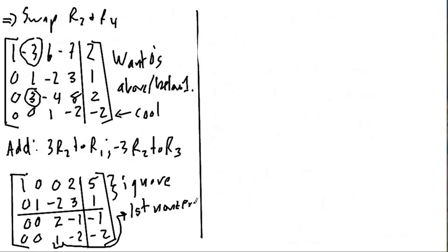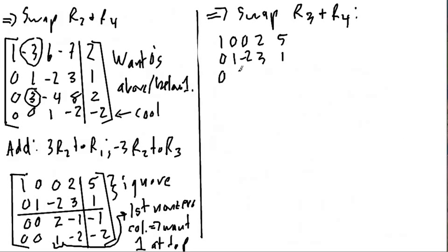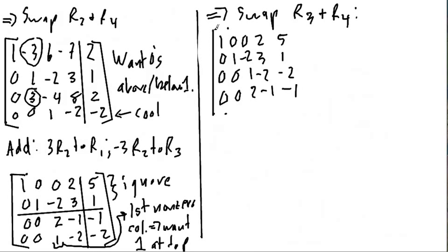I've got a 2 at the top and a 1 at the bottom, and what makes the most sense to do is swap rows 3 and 4. Now my old row 4 is my new row 3, and my old row 3 is now my new row 4.